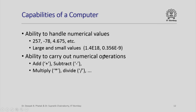A computer has the ability to carry out numerical operations: it can add, subtract, multiply, and divide. For addition, subtraction, and division we use the symbols plus, minus, and slash. For multiplication, most computers use the symbol star (*). This is because the letter x used to denote multiplication on paper could be confused with the letter x used as a variable in programs, so the star symbol is used to indicate multiplication unambiguously.